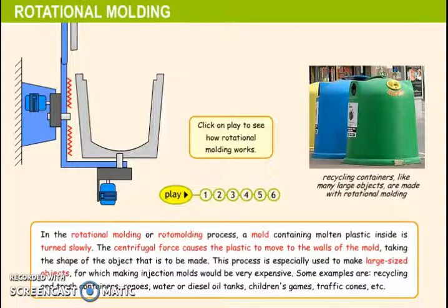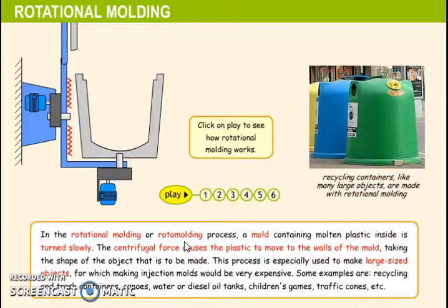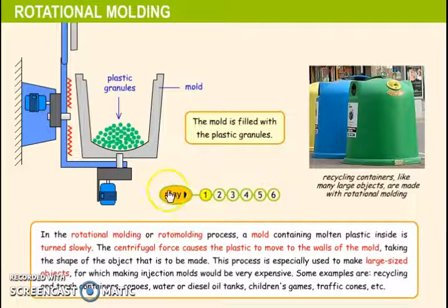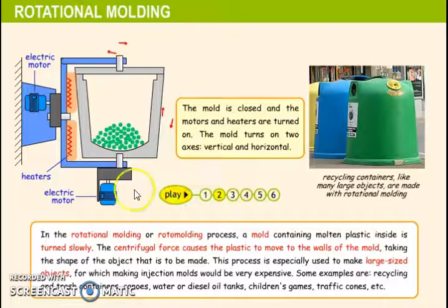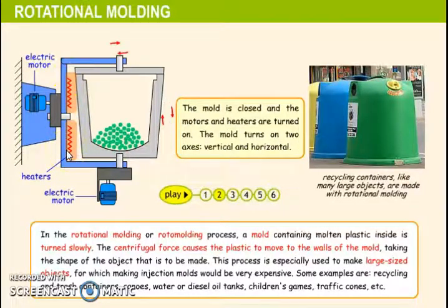In the rotational molding, or rotomolding, process, the mold is filled with plastic granules. The mold is then closed and the motors and heaters — here you can see the heaters — are turned on.